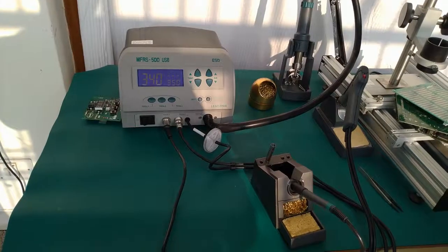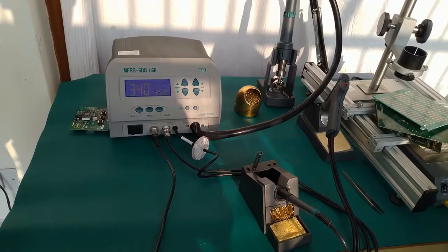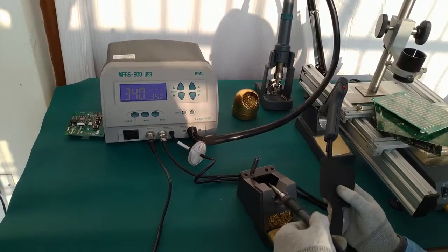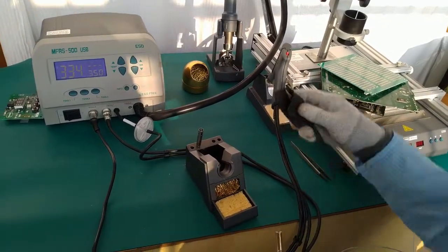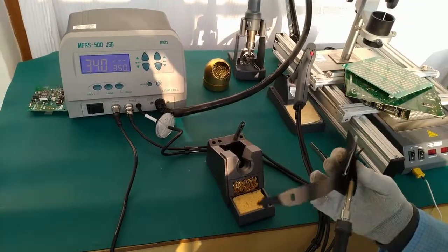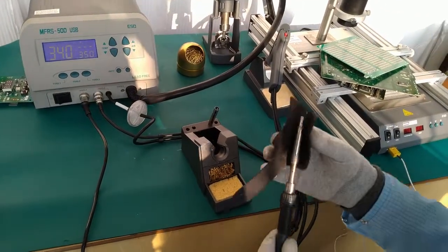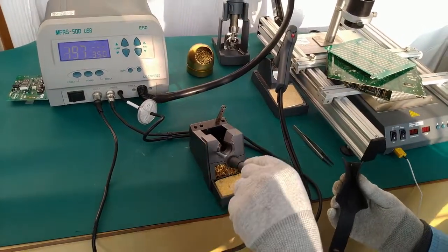Now we will show you how to change the soldering tip in hot condition. A silicon pad is provided along with the soldering iron to change the tip in hot condition. Simply pull the soldering tip and insert the other soldering tip by pushing it inward.